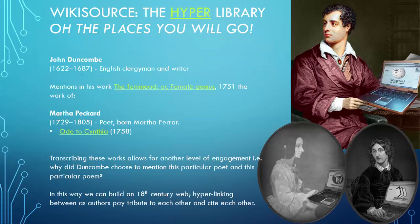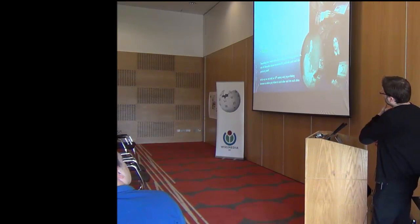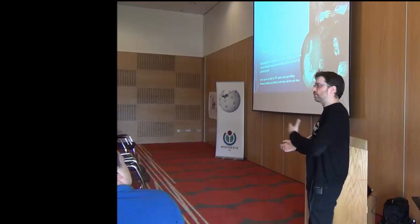This was something Martin referenced yesterday — the author John Duncombe referenced a poet called Martha Peckard and a poem called 'Ode to Cynthia.' And through the magic of Wikilinks, we can see that poem and read it and appreciate what it was that John Duncombe saw in that poet and that particular poem. So it allows for a different way of engagement, and it also creates this lovely image of an 18th-century web of authors citing each other, paying tribute to one another.